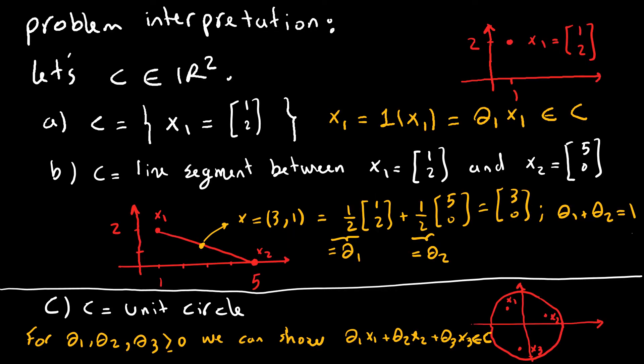Let's see what happens when we have this problem pictorially. Suppose C is a set in R² and suppose C is just a singleton, 1, 2. Once we have this singleton, we can rewrite x₁ as 1 times x₁, θ₁ times x₁ in C. And this is the proof showing singleton is in C.